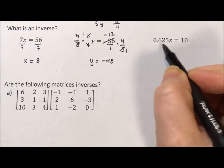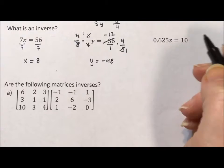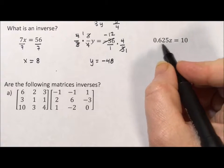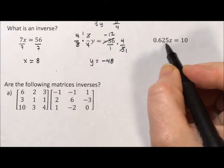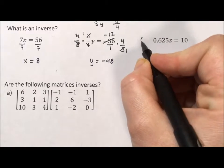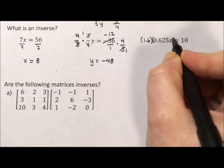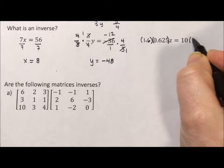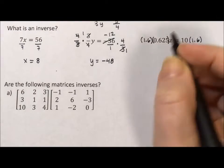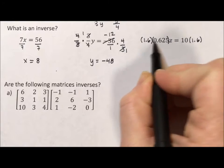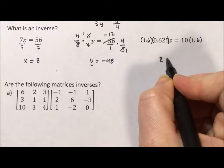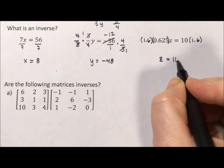Now for this one, you might think it's multiplication, let's divide. But I'm going to do a tricky method. Instead of dividing, I'm going to multiply by 1.6. I happen to know the inverse of 0.625. If I multiply both sides by 1.6, these two multiply out to 1 and I'm left with 1z, and 10 times 1.6 is 16.